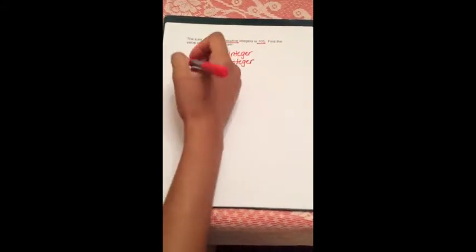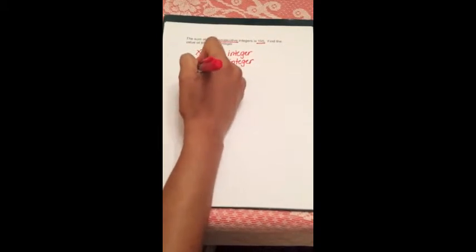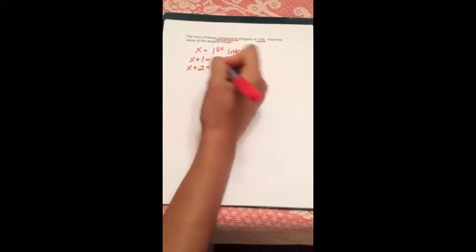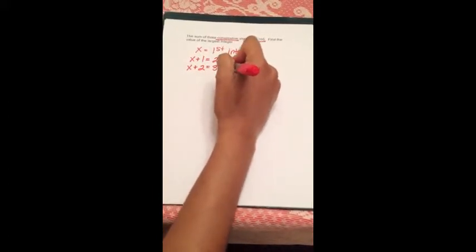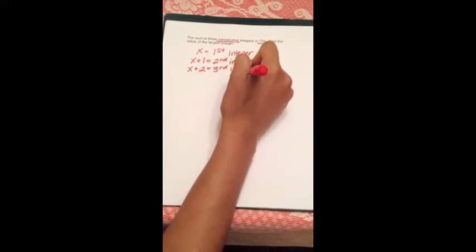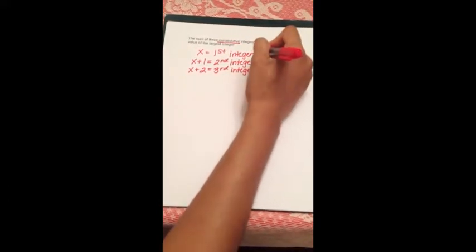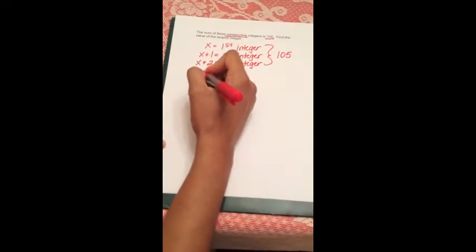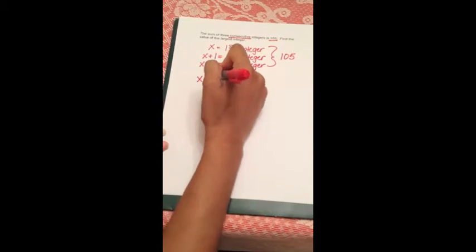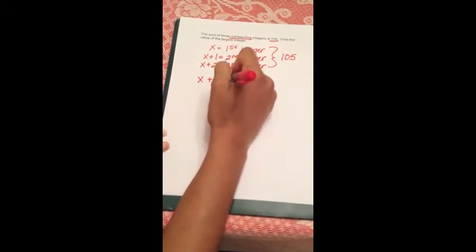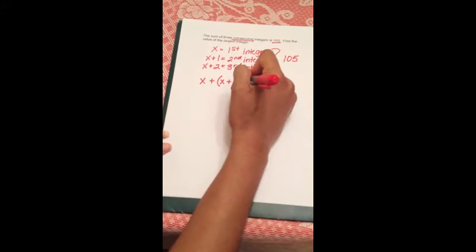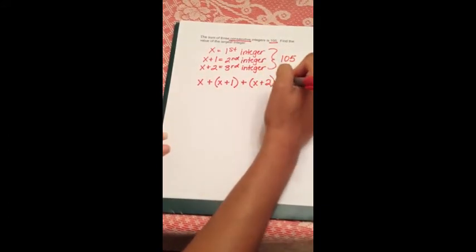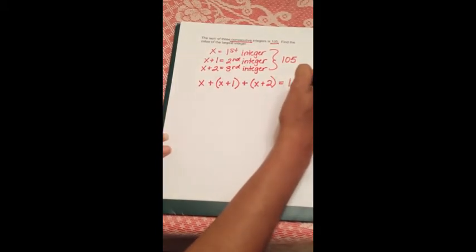Lastly, we're looking for that third value, which will be x plus 2, because we're looking for the number that follows the second number in the series. So that's our third integer. We have x plus (x+1) plus (x+2) equals 105.